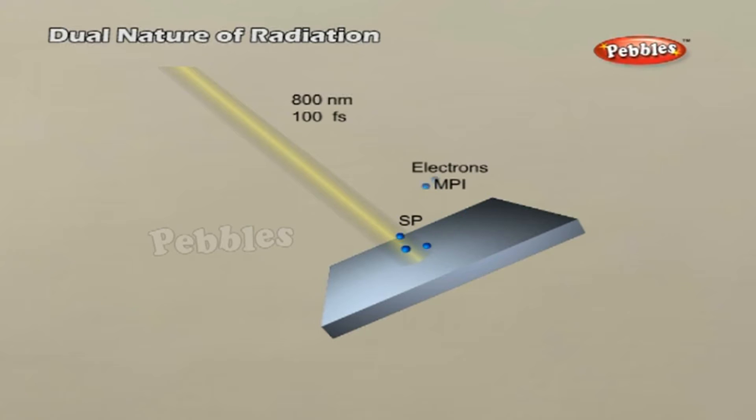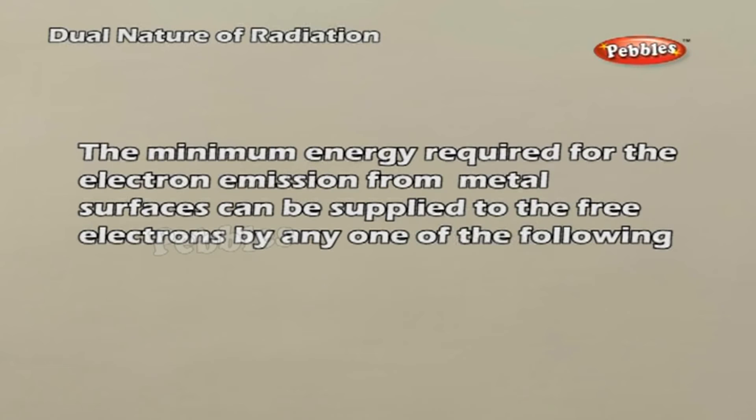A certain minimum amount of energy is required to be given to an electron to pull it out of the surface of the metal. This minimum energy required by an electron to escape from the metal surface is called the work function of the metal. The minimum energy required for electron emission from metal surfaces can be supplied to the free electrons by any one of the physical processes.